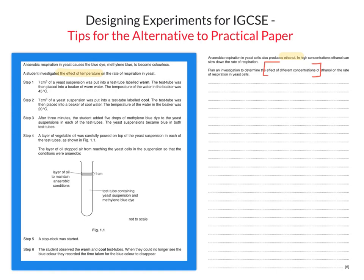It's asking you to plan an investigation worth six marks, so I'm going to tell you where you get your marks from, using this particular experiment as an example. One thing to note is that you get marks for suitable alternative methods. So if the method you choose to write about isn't quite the same as the one in this video, provided it is a legitimate method that gives valid results, you will still get full credit.